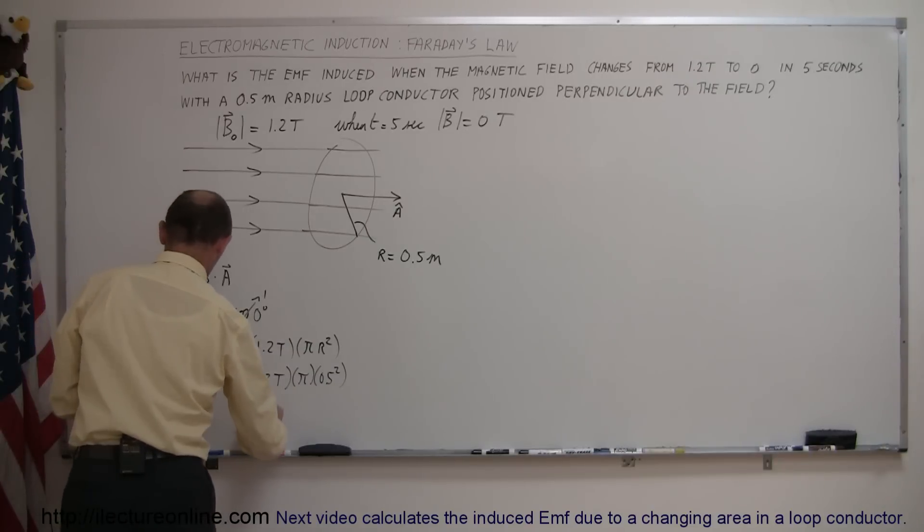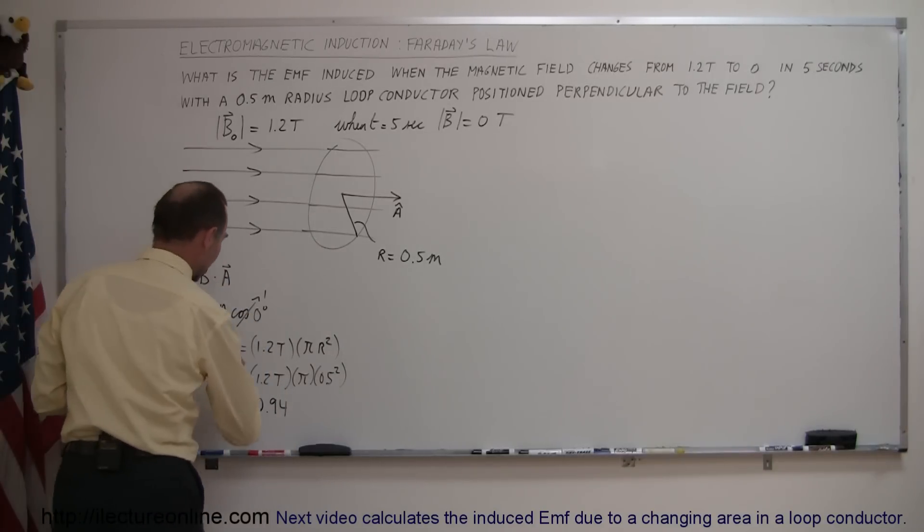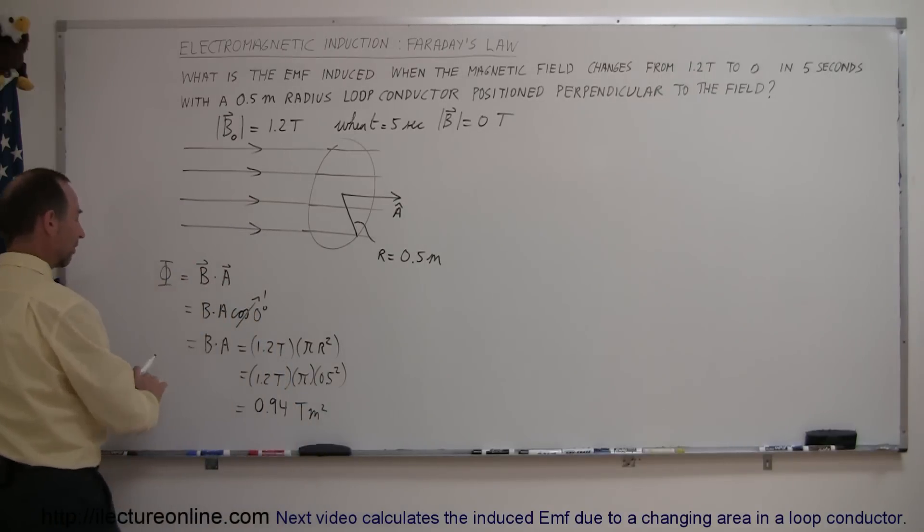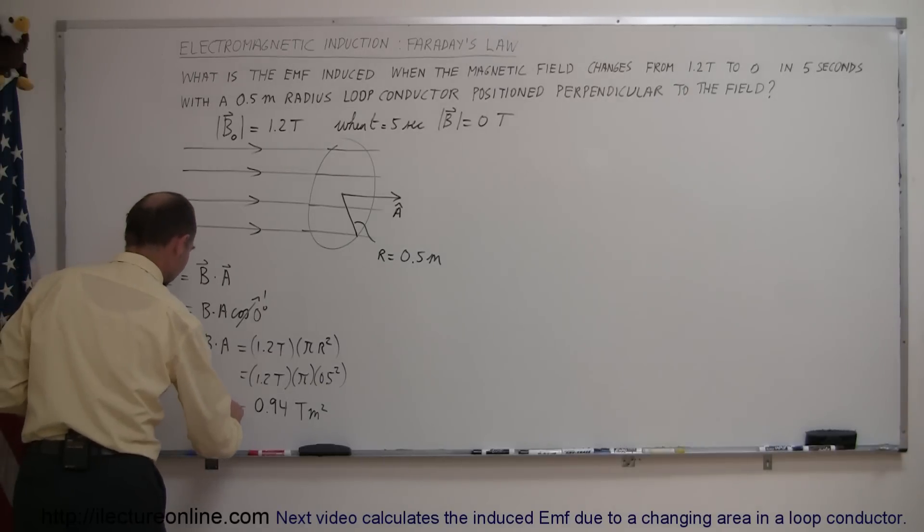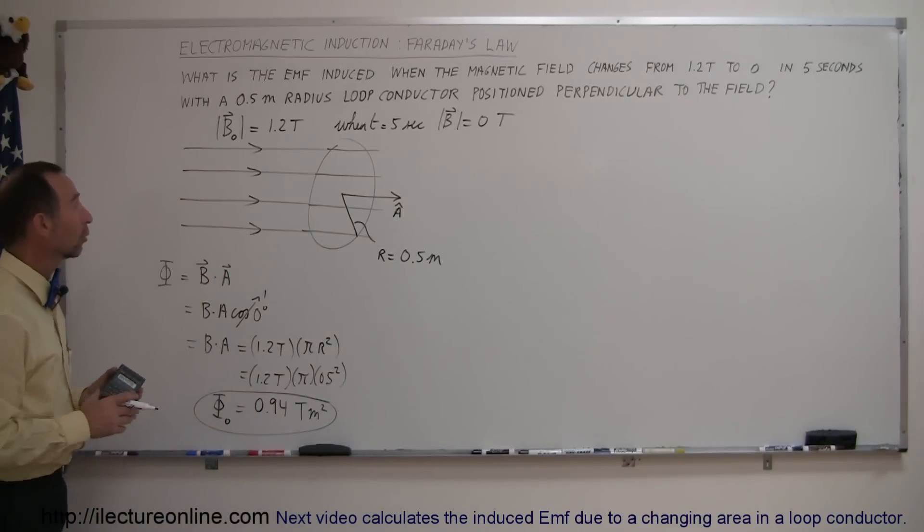so that's 0.3 times pi equals, so that would be equal to 0.94 and of course the units for flux would be tesla meters squared, simply teslas times the area of the circle, so that's the initial flux through the current loop, or I shouldn't say current loop, through the conductor loop,